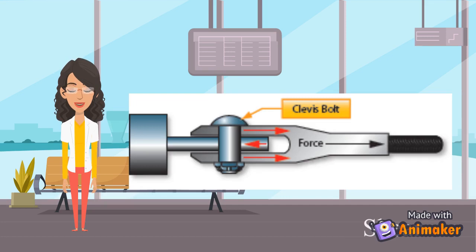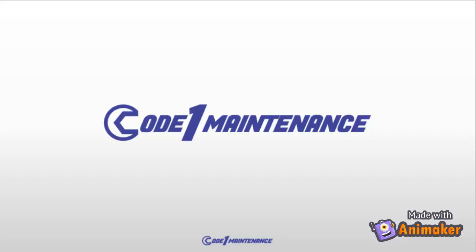When a shear stress is applied to an object, the force tries to cut or slice through it. The bolt in the illustration has two opposing forces which are applying a shearing action to the bolt.